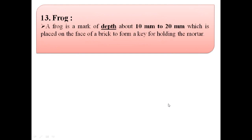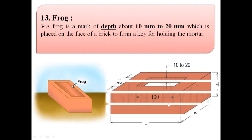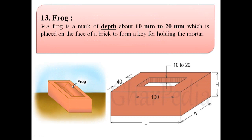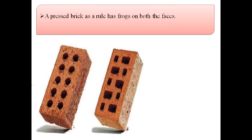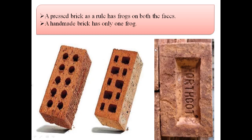The next term is frog. A frog is a mark of depth about 10 mm to 20 mm which is placed on the face of a brick to form a key for holding the mortar. The depth of the frog should be between 10 to 20 mm. Wire cut bricks are not provided with frogs. A pressed brick as a rule has frogs on both faces, while a handmade brick has only one frog.